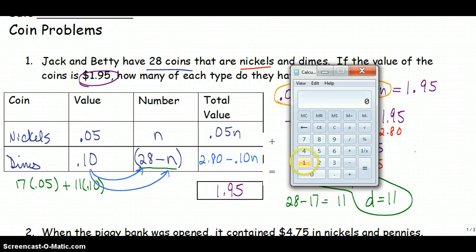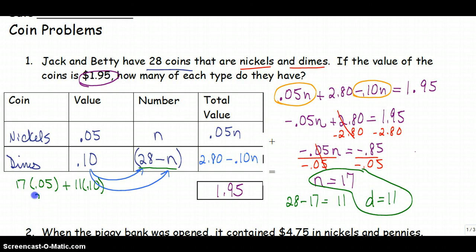Okay, so 17 times .05, that gives me $0.85, plus the 11 times 10 cents is $1.10. 85 cents plus $1.10 is equal to $1.95, so my work checks out.